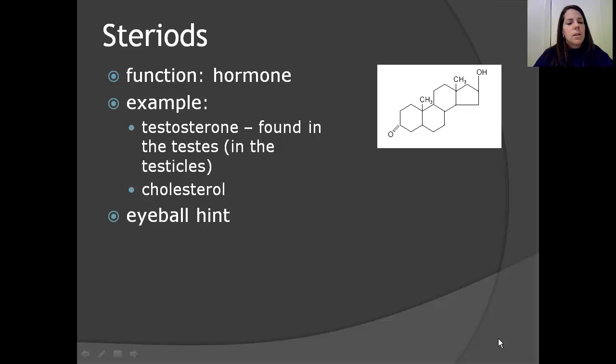On to our last lipid we're going to talk about today is the steroid. And its function is to act as a hormone. So an example is testosterone, which is found in the testes and the testicles. Another example is cholesterol, which we're going to talk more about later. So how do you recognize what a steroid looks like? The thing that you want to do is you want to be able to look for the four ring structure here, all joined together. So two and then two all joined together. And that will tell you that you are looking at a steroid.